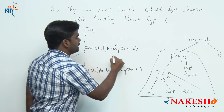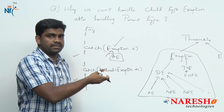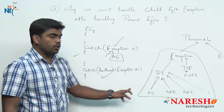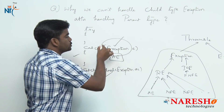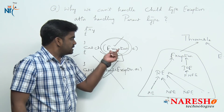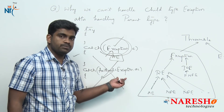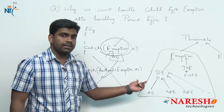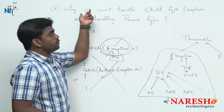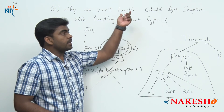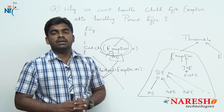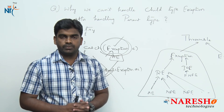Since ArithmeticException is already being handled under the parent Exception catch block, specifying it explicitly a second time is not allowed. That is why after handling a supertype exception, it is impossible to handle the child type exception again — because the same exception has already been caught. This is the reason we cannot handle a child type exception after handling a parent type. This is a very important question from a Java interview perspective.